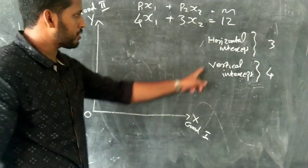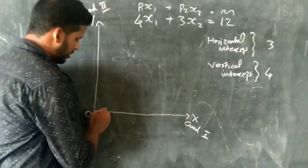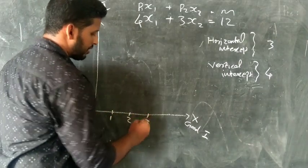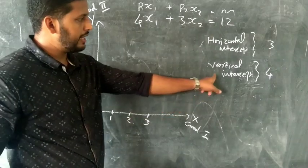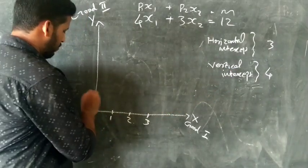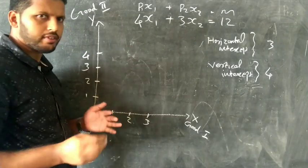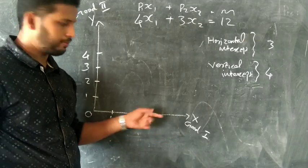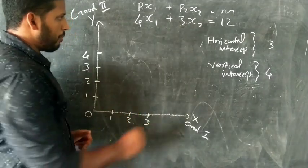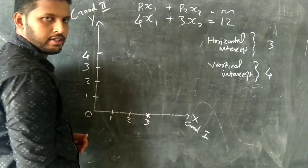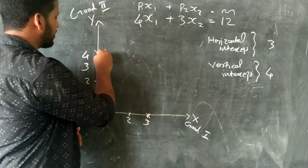Now on the X axis: 1, 2, 3 — so 3 is the horizontal intercept. On the Y axis: 1, 2, 3, 4 — so 4 is the vertical intercept. Horizontal intercept is 3 and vertical intercept is 4.